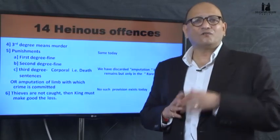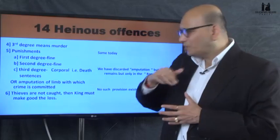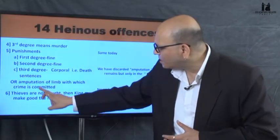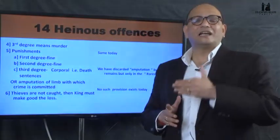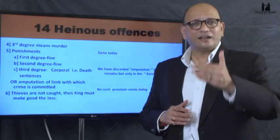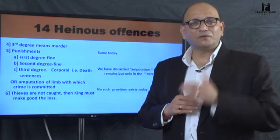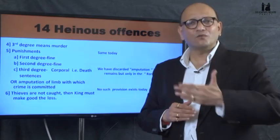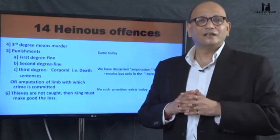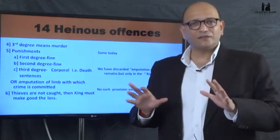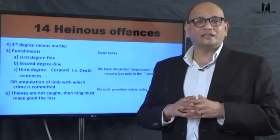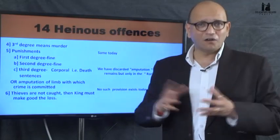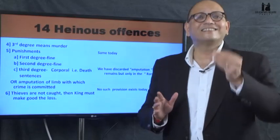There is also the punishment of amputation of the limb with which the crime is committed — that is, an eye for an eye, a hand for a hand. We have abolished that particular kind of punishment today, as we have become more civilized. Corporal punishment remains, but even today there are discussions about the death sentence, since various countries in the world have actually abolished it.